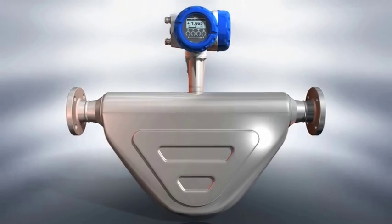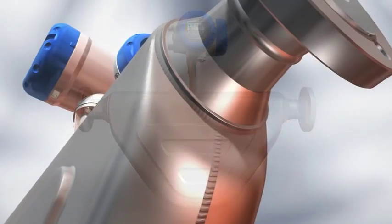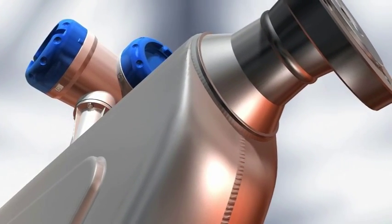Krona's OptiMass 6400 Coriolis Flow Meter is the new standard, high-performance solution for process industries.